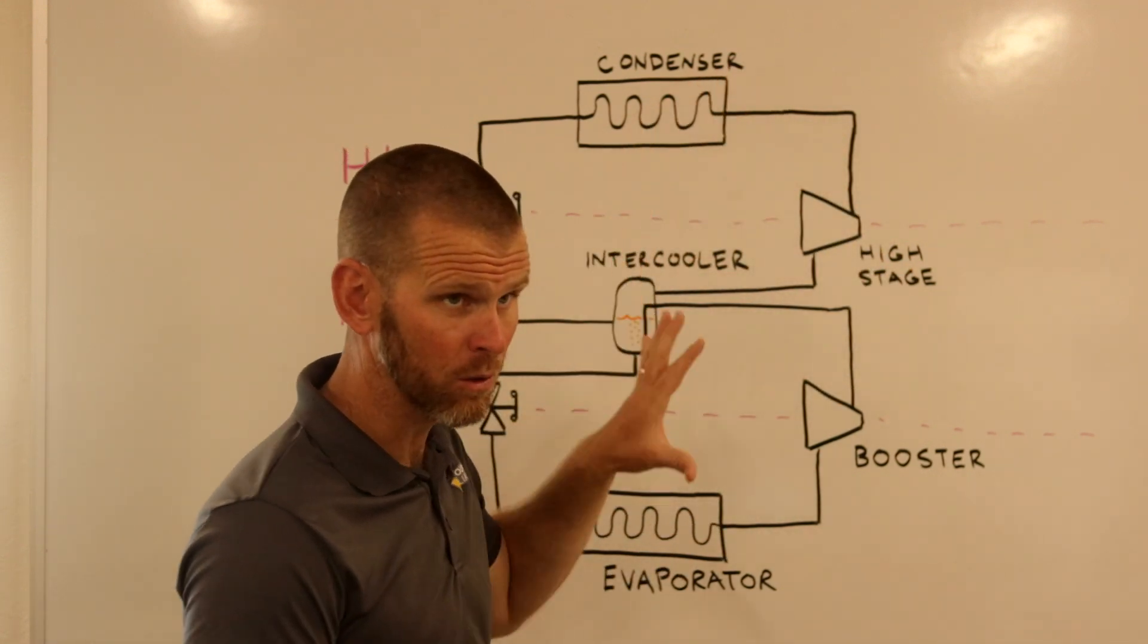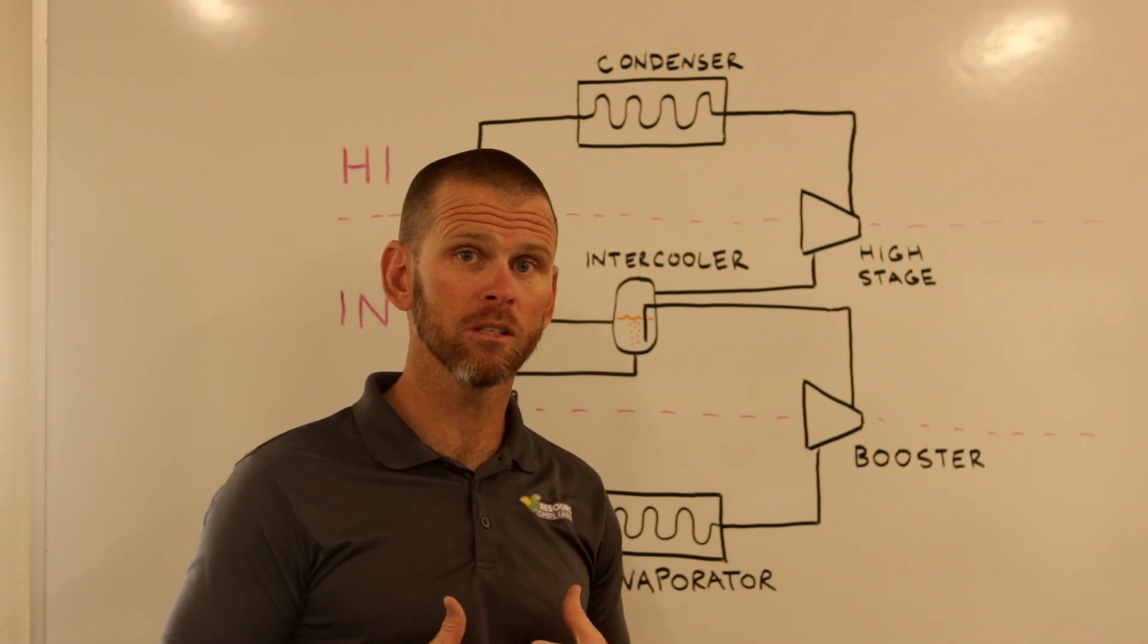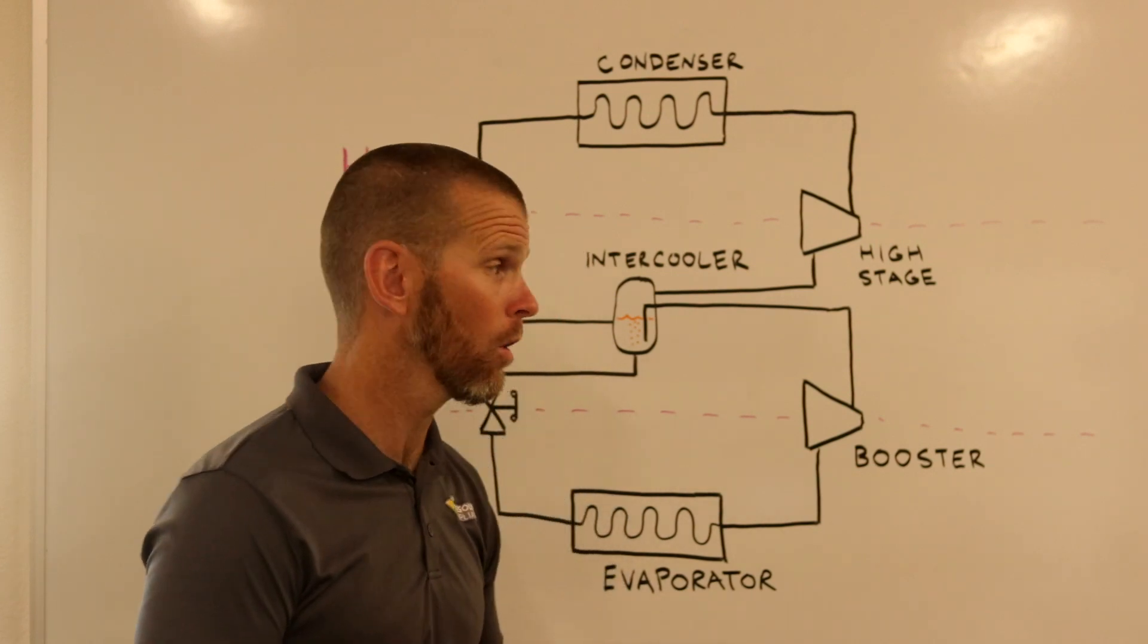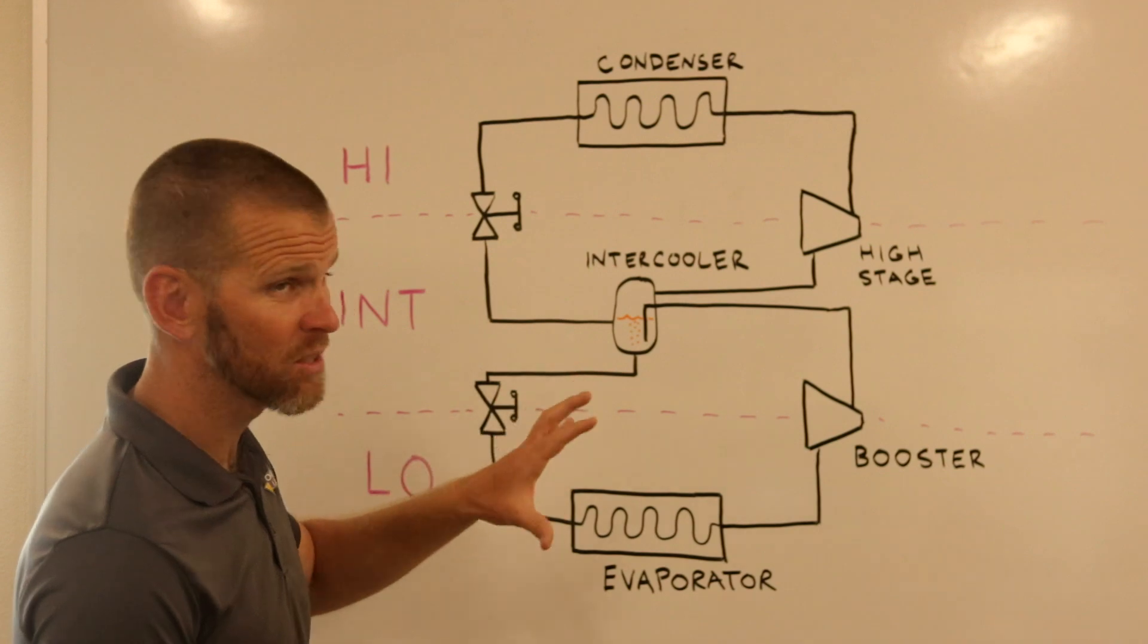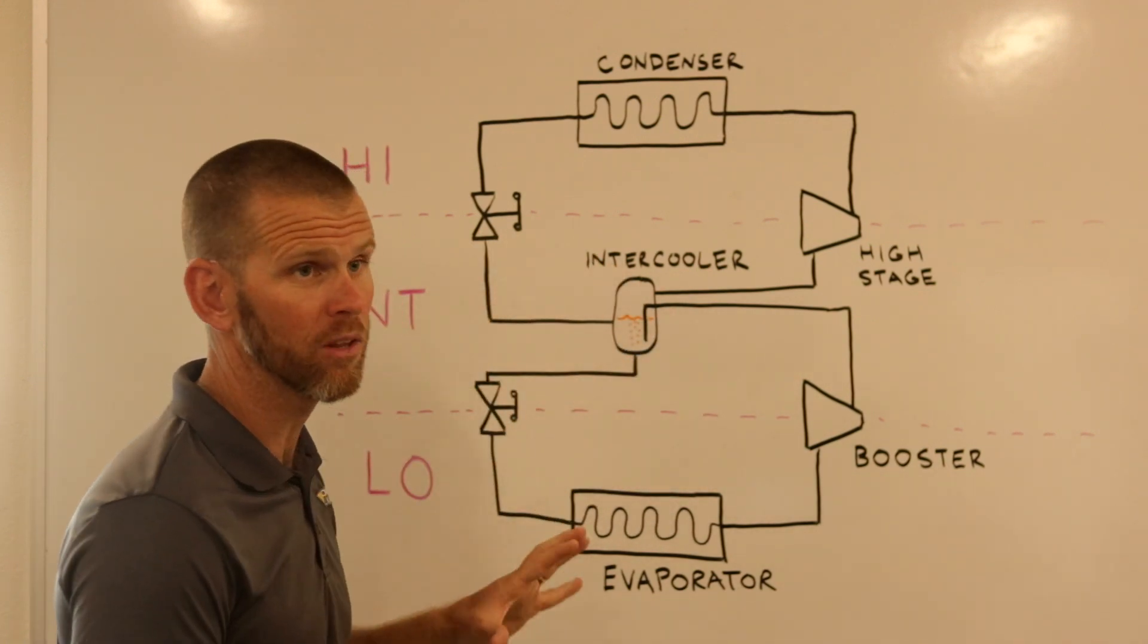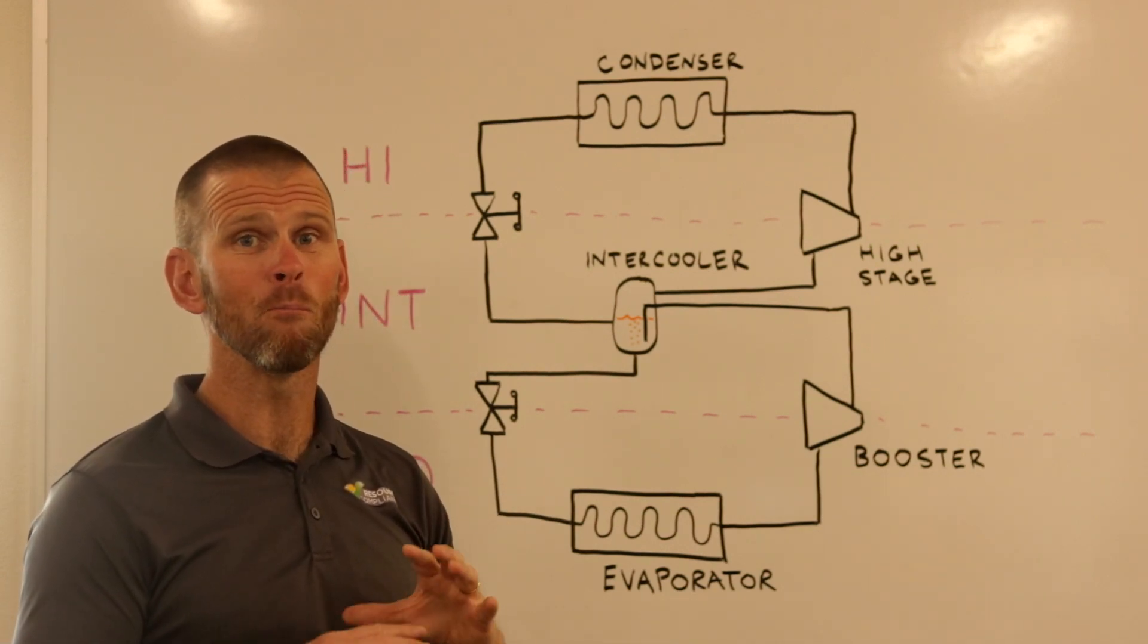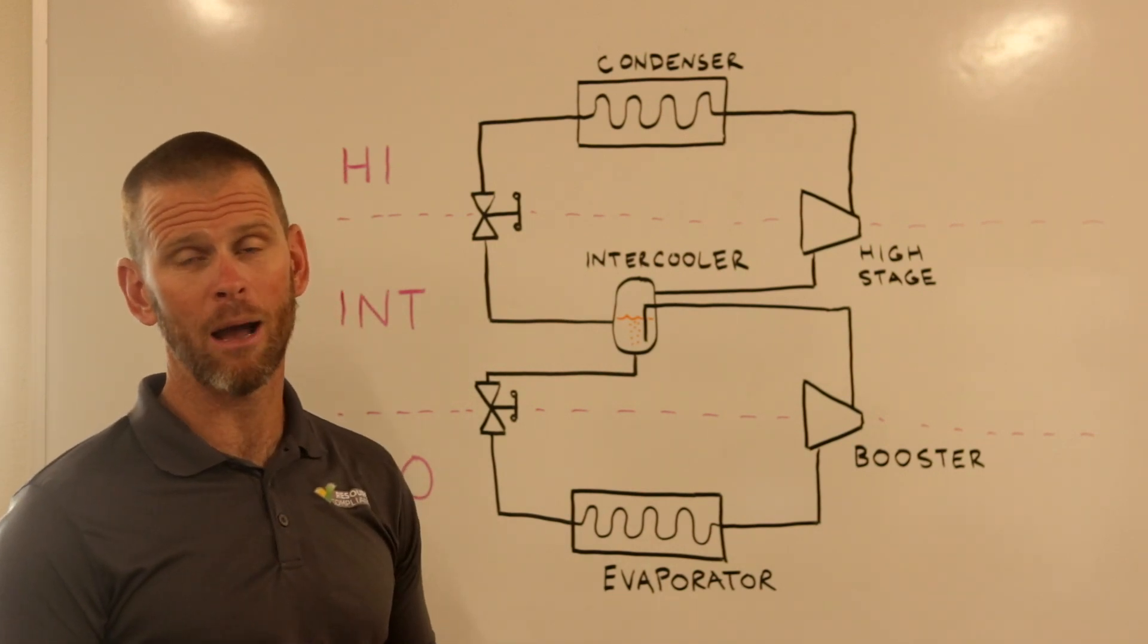By doing this, we drastically reduce the discharge temperature that's experienced right here, which is what we're aiming for. Furthermore, we operate more efficiently because of some of the various things I already discussed. For example, the flash gas not going through the evaporator in our first expansion valve. So two-stage systems are pretty much mandatory when it comes to very low temperature applications.